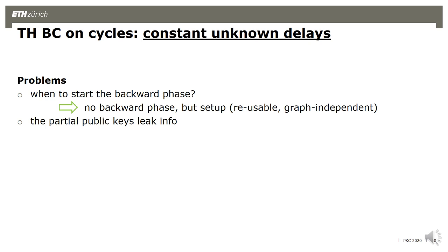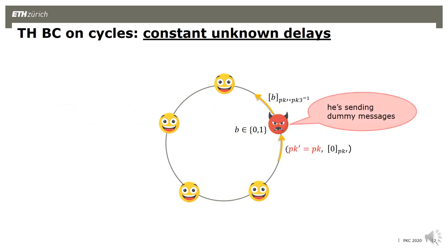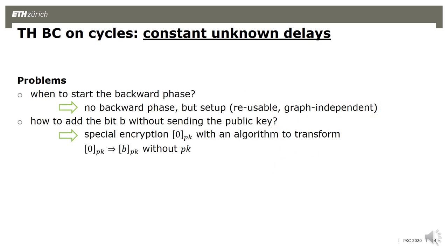The next problem is that the partial public keys sent around actually leak information. If a party is corrupted, it can watch how long the public key sent by the neighboring party equals the actual product public key — this means that party hasn't received the ciphertext yet. After the public key changes, the corrupted party knows exactly when the neighbor received the ciphertext. This reveals exactly the delay on that edge, which is not topology hiding.